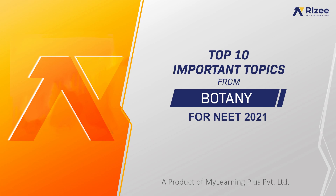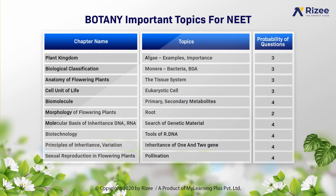Now botany important topics. Coming to the chapter of plant kingdom in botany, important topic is algae, where you have to focus on examples and the importance of algae to humans. Probability of questions are 3. In chapter biological classification, important topic is kingdom monera, which includes bacteria and blue green algae or blue green bacteria. Probability of questions are 3. In anatomy of flowering plants, important topic is the tissue system. Probability of questions asked are 3.